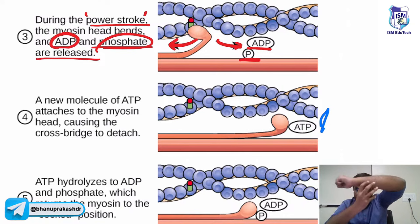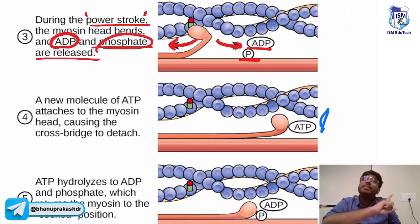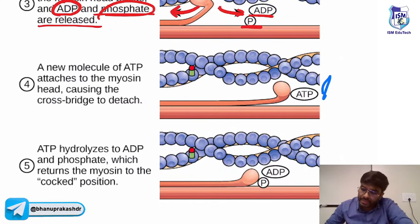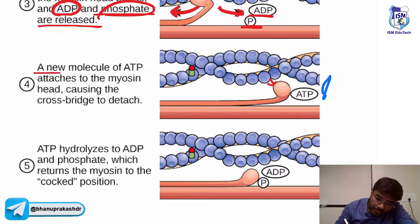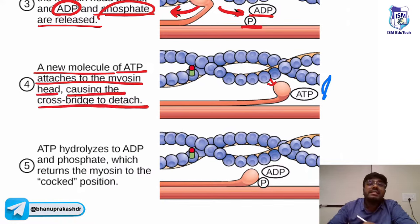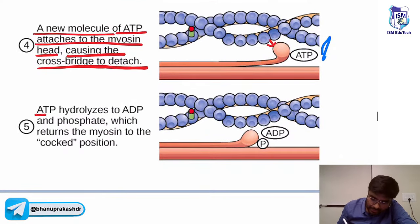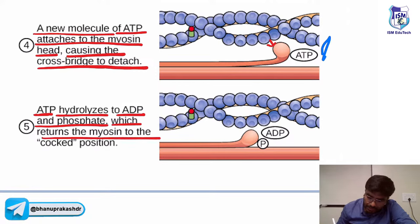After one power stroke, the myosin head has to detach and go bind with a new active site for further sliding. To detach the cross bridge, you need one more ATP molecule — a new ATP is required for cross bridge detachment. A new ATP molecule will come and attach with the myosin head, causing the cross bridge to detach.